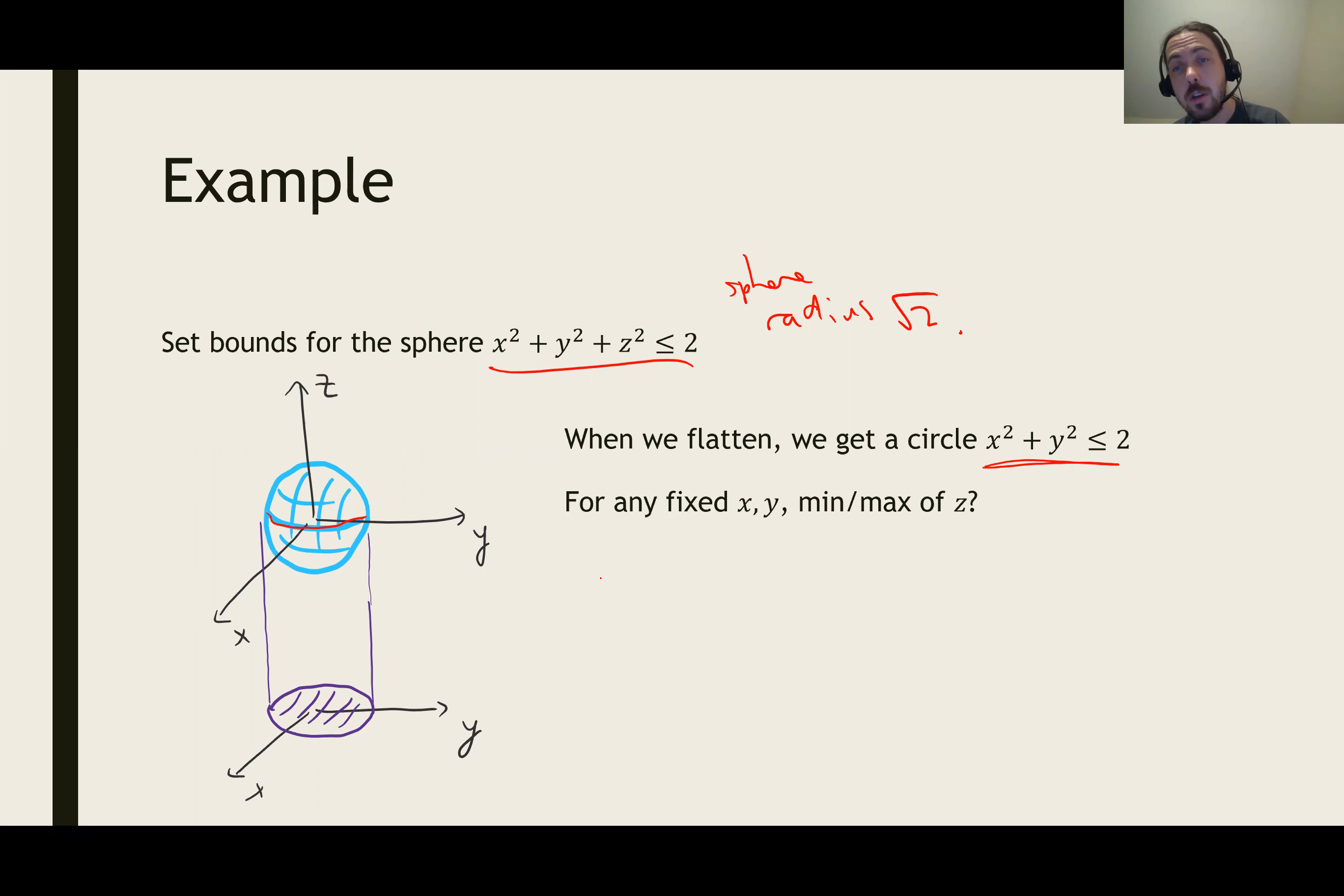So our start is we set up a double integral. Let's say dx dy on the outside. The bounds should be the bounds for a circle of radius square root 2. So y goes between minus square root 2 and plus square root 2. And then x goes between square root of 2 minus y squared negative and square root of 2 minus y squared positive. Those are the bounds for the double integral that goes with this shape.